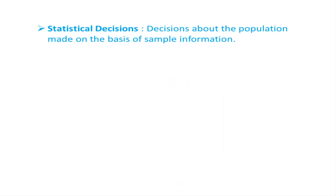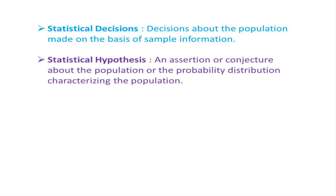In attempting to reach these decisions, it is useful to make some initial conjectures about the population involved. Such conjectures are called statistical hypotheses. A statistical hypothesis is an assertion or a conjecture about the population or the probability distribution characterizing the population.